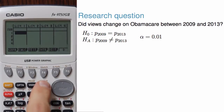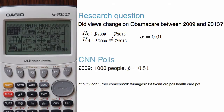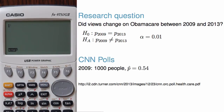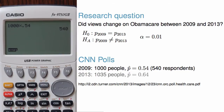Back in 2009, a CNN poll of about 1,000 people found that 54% of US adults believed that Obamacare would increase their healthcare costs, or about 540 out of 1,000 respondents. In 2013, a CNN poll of 1,035 US adults found the number was 64%, or 662 out of 1,035 respondents.